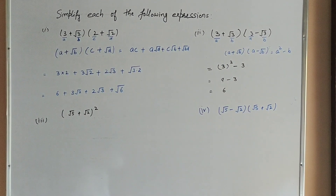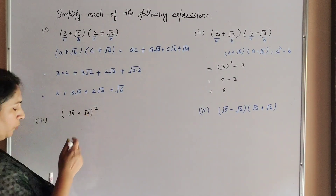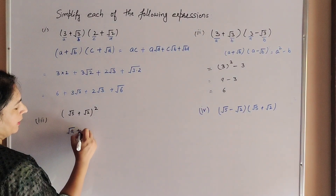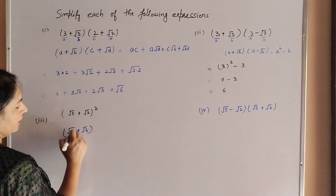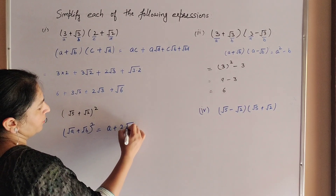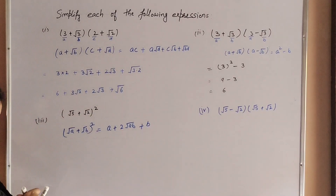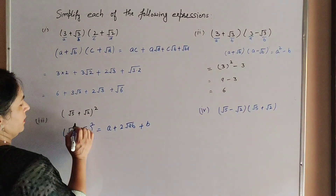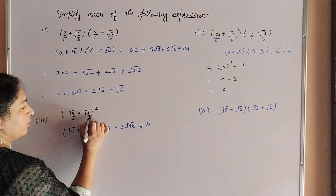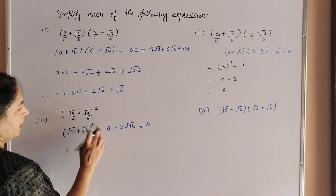This is question number 3: (√5 + √2) whole square. To simplify this we use the identity (√a + √b)² = a + 2√(ab) + b, where a = 5 and b = 2.